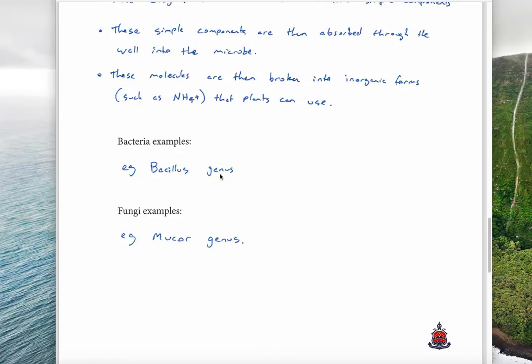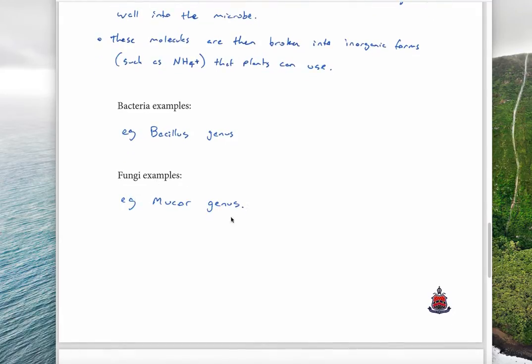Bacteria examples here are the bacillus genus—there are lots of bacillus species. Bacillus thuringiensis, which we know from BT cotton, is a soil bacteria that also helps break down organic matter. The mucor genus is an example of a genus of fungi that breaks organic matter apart.